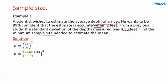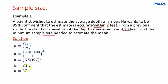Substituting into the formula: n = (2.58 × 4.33 / 2) squared. Calculate 2.58 times 4.33 divided by 2 to get 5.5857, then square it to get 31.2. Since n came out as a decimal, we must always round up — never round down in this topic. Rounding 31.2 up gives us 32. So the minimum sample size needed to estimate the mean is 32.